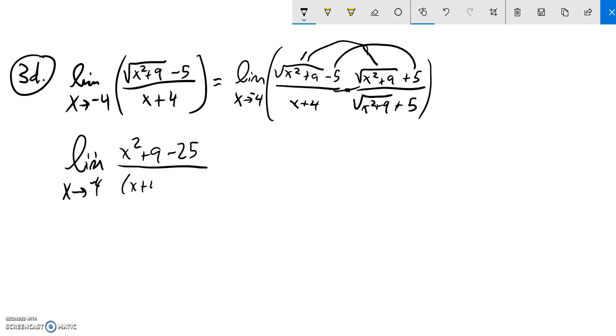I'm not even going to worry about it. I'm just going to leave it as x plus four times x squared plus nine plus five. And I'm not multiplying it out because I'm hoping that this x plus four that's right here will get canceled out.